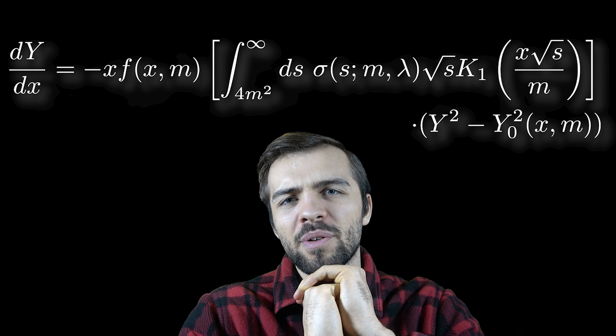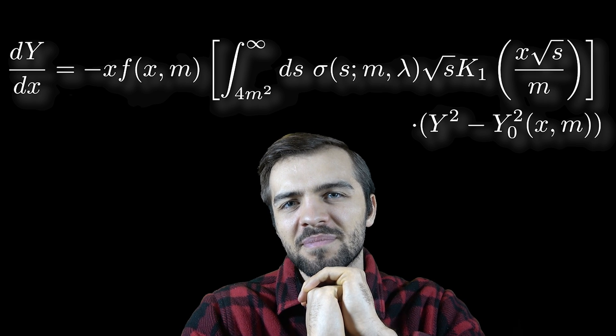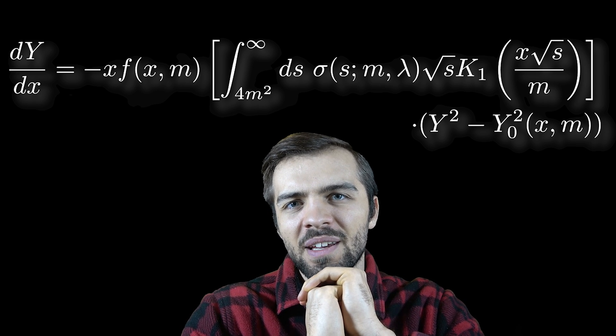Do you see this problem that I'm showing above? It looks pretty difficult, doesn't it? It's also very difficult to derive, and it explains a very complicated phenomenon of the evolution of dark matter in the universe. My point here is that although this problem looks complicated, because it's set up in this beautiful way, it's actually very easy to solve in Python.